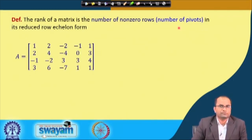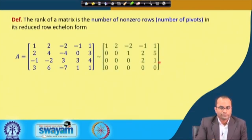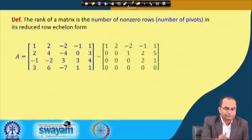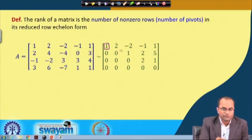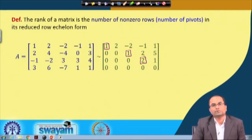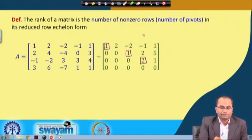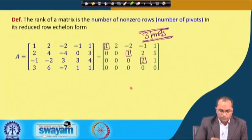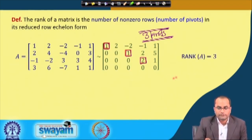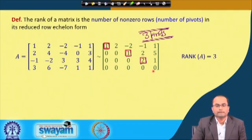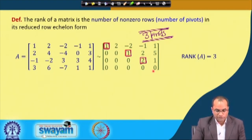For instance, we take matrix A which was already used in previous lectures. We have also seen its reduced row echelon form given here again. In this reduced row echelon form we need to count the pivots: this 1 is a pivot, this 1 is a pivot, and this 2 is a pivot. So we have 1, 2, 3 — there are 3 pivots here, and therefore the rank of this matrix is 3, which is the number of pivots in reduced row echelon form.